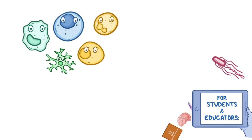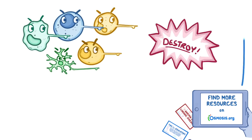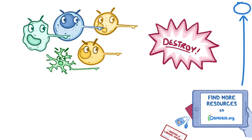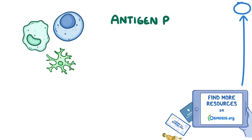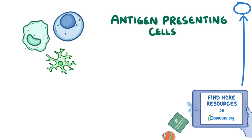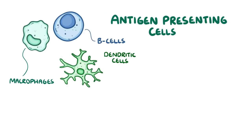Normally, the cells of the immune system are ready to spot and destroy any foreign pathogens that could cause the body harm. To help with this mission, there's a certain category of cells called antigen presenting cells, and these include macrophages, B cells, and dendritic cells. The most common member of the antigen presenting cell club is the dendritic cell, which is named after its long, beautiful branch-like arms called dendrites.